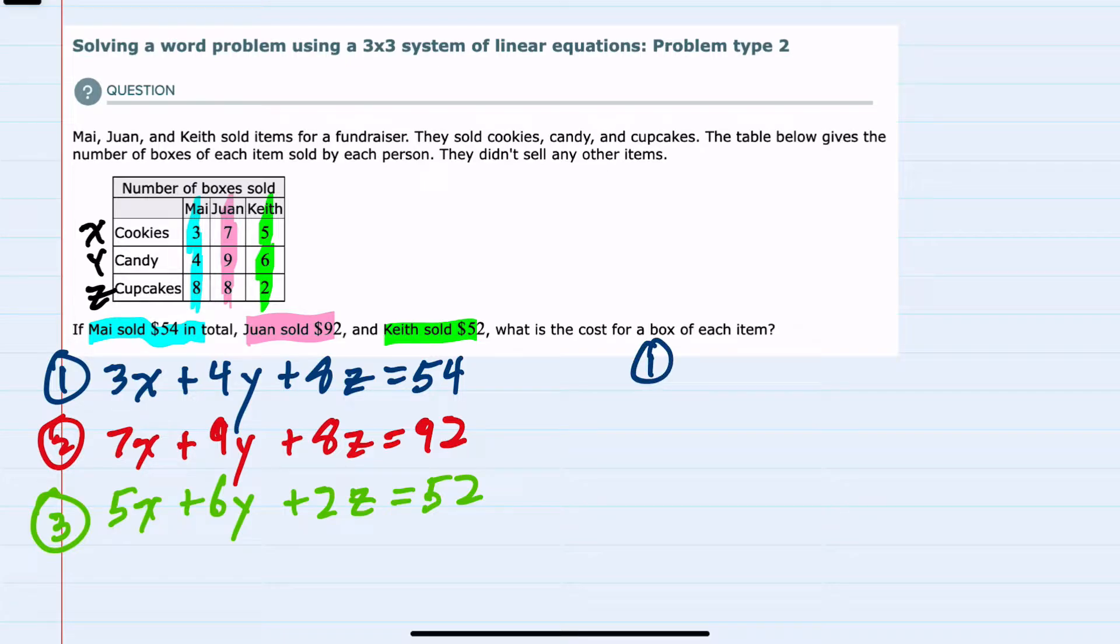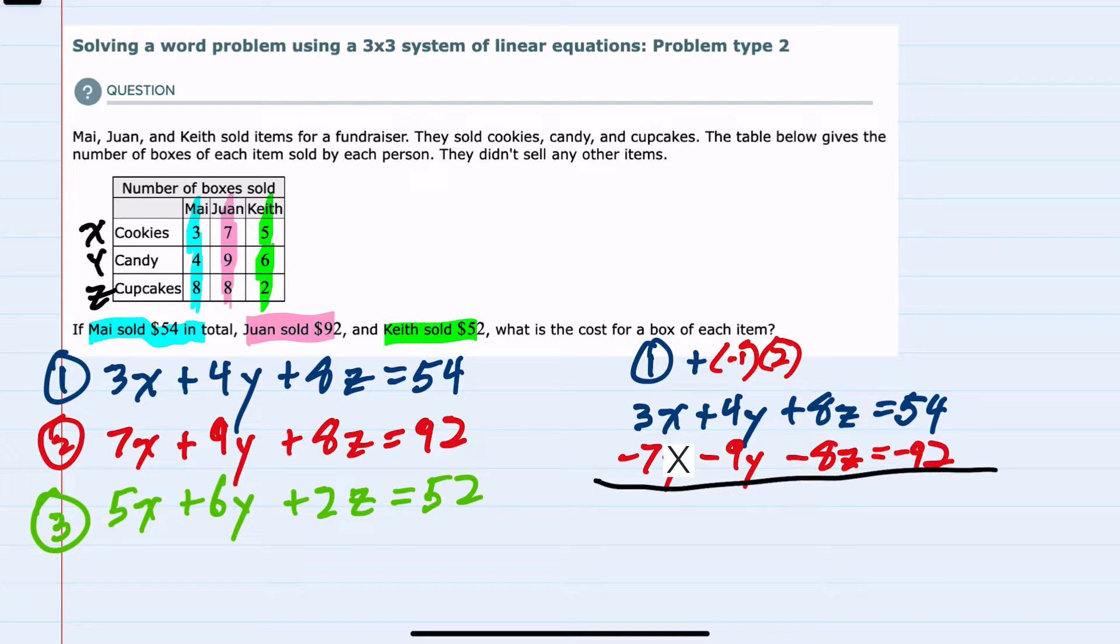So I'm going to take equation one, and I'm going to add to that negative one times equation two, to get the Z's to cancel. Just writing that vertically, equation one, we know is 3X plus 4Y plus 8Z equals 54. Now equation two, I'm multiplying by a negative one, so I'm going to change all of the signs. That would make it a minus 7X, a minus 9Y, and a minus 8Z equals a negative 92. And from here, when we add the 3X minus 7X is a minus 4X, the 4Y minus 9Y is a minus 5Y, the Z's cancel, and that's why we added them this way. On the right-hand side, 54 minus a 92 would give us a negative 38.